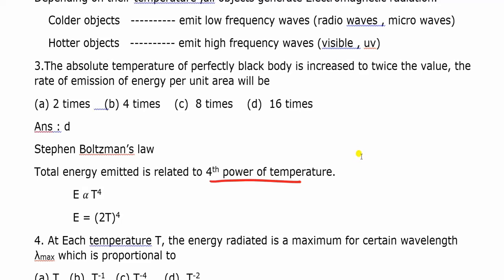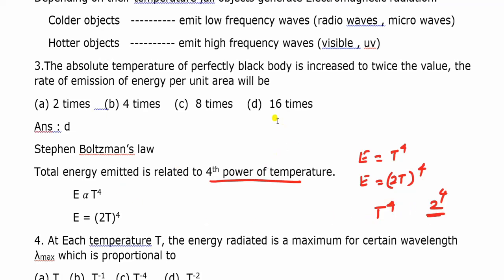Question number 3: At temperature T the energy radiated is proportional to T to the power 4. When temperature is doubled to 2T, the new energy is proportional to (2T) to the power 4. The ratio is 2 to the power 4, which equals 16. So the answer is B — 16 times.